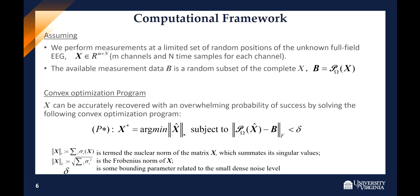In our proposed computational framework, we assume that we perform EEG measurements at a limited set of random positions of the unknown EEG field. We assume we have M channels and N time samples for each channel. The available measurement data is a random subset of the complete EEG set. Then we use a convex optimization program. The overall EEG can be accurately recovered with high probability of success by solving this convex optimization program, finding the limited set of random positions to recover the full EEG field from these limited measurements.